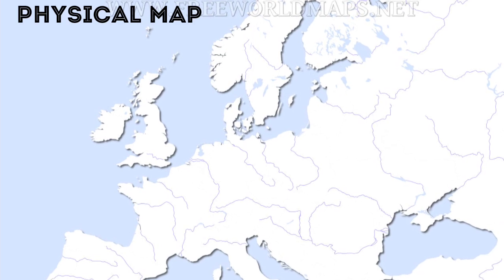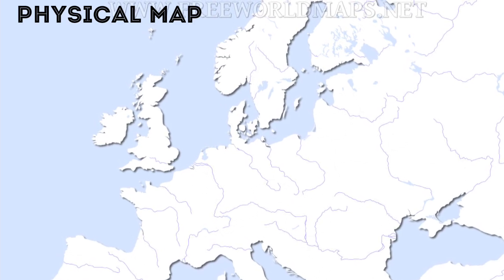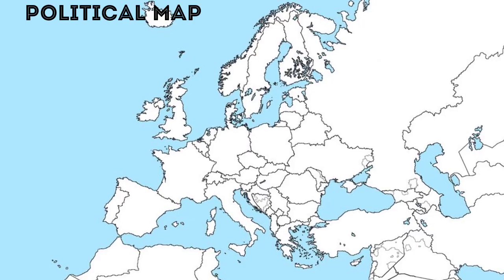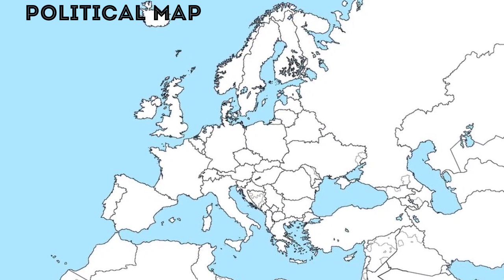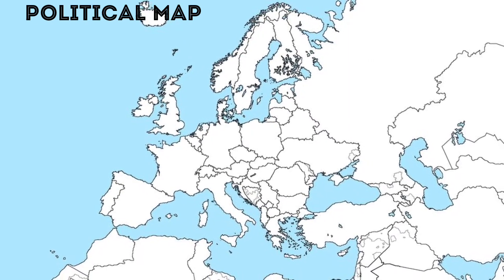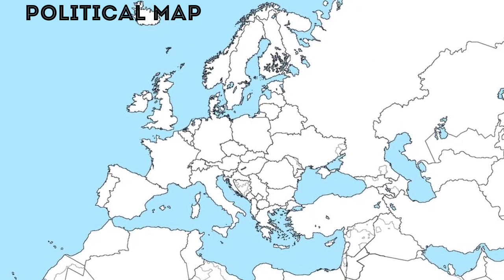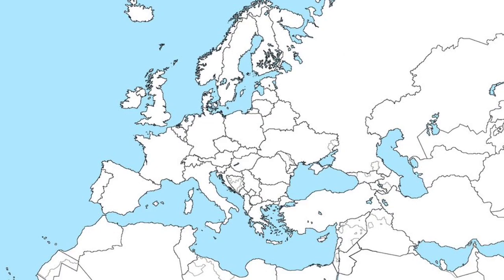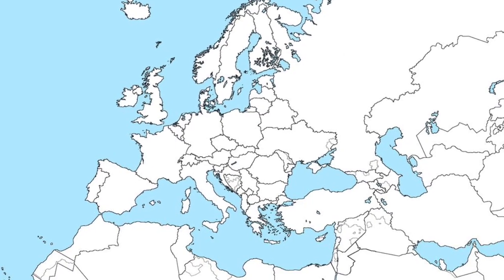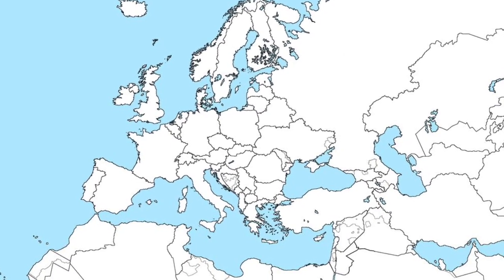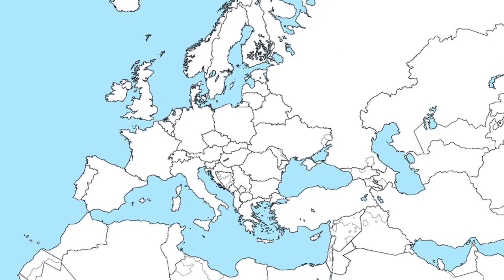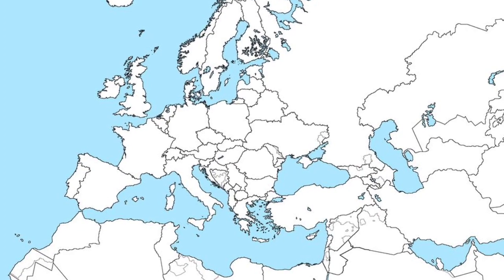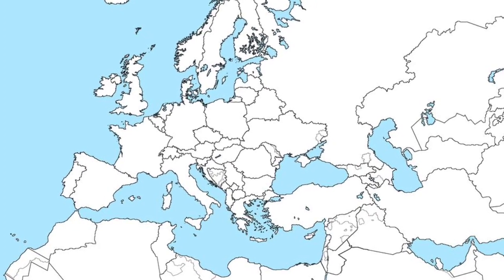This is the physical map of Europe, while this is the political map of Europe. As you can see, this is a map of Europe which we will be using to study map pointing.